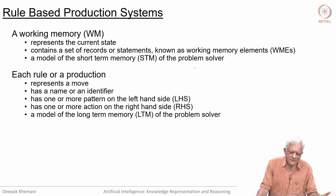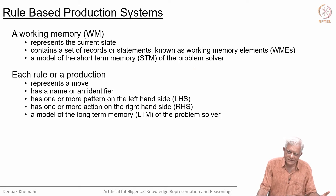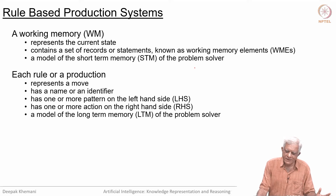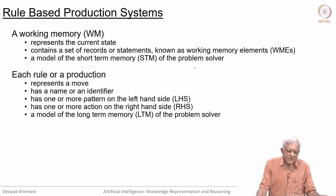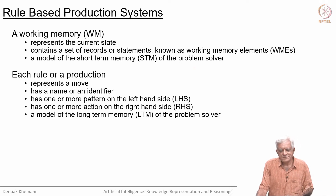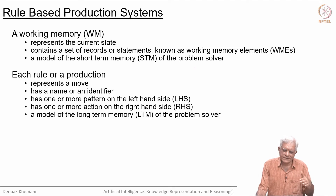Then it has a set of rules or productions. Each rule or production represents a move, a decision, or a conditional action. It has a name or an identifier. Every rule will have a name, one or more patterns on the left-hand side, and one or more actions on the right-hand side. If the left-hand side matches, then the right-hand side — whatever it says — has to be done. We can think of this as the long-term memory of a problem solver, because it encapsulates the problem-solving knowledge, whereas the working memory contains the problem-solving instance. Rules capture the knowledge that the agent has.